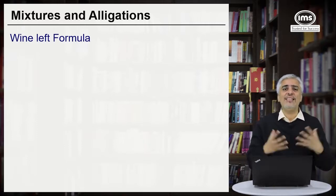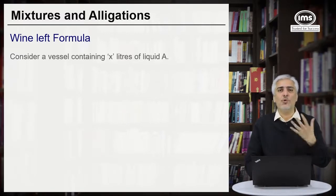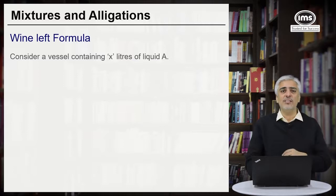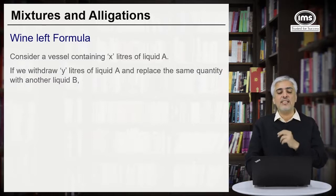Suppose if I had a jar where there was x liters of wine. Consider a vessel or a jar containing x liters of liquid A. You want to call it liquid A, you want to call it wine, doesn't matter. And now if you withdraw y liters of liquid A and replace the same quantity with another liquid B.